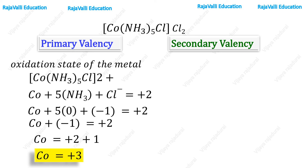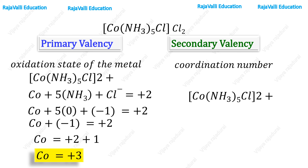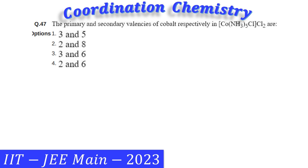Similarly, we find out the secondary valency of cobalt. Cobalt metal is surrounded by six ligands — that is, five ammonia ligands and one chloride ligand. So the coordination number, or secondary valency, is six. Therefore, the answer is three and six — the primary and secondary valences of cobalt respectively in the given complex are three and six.